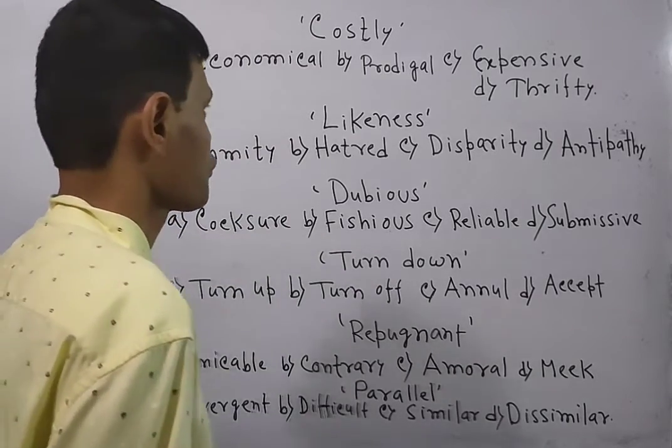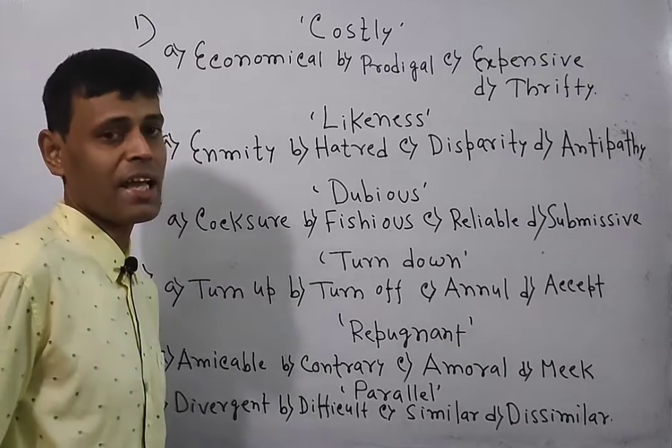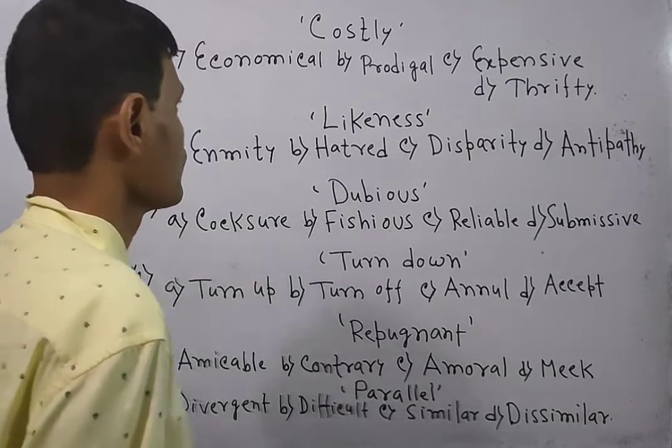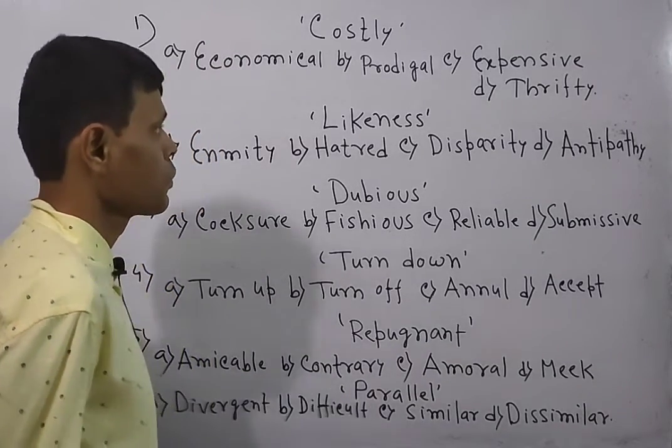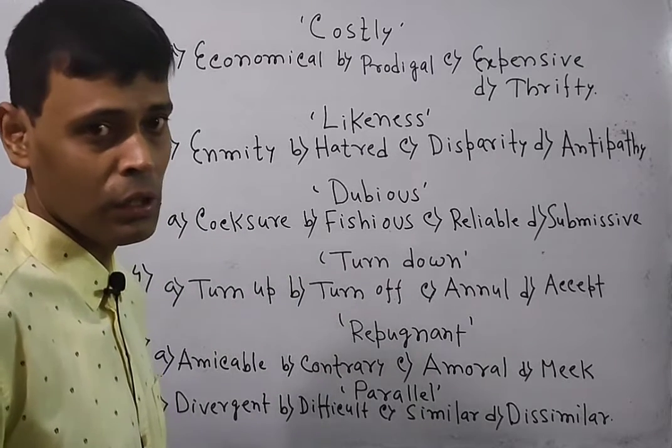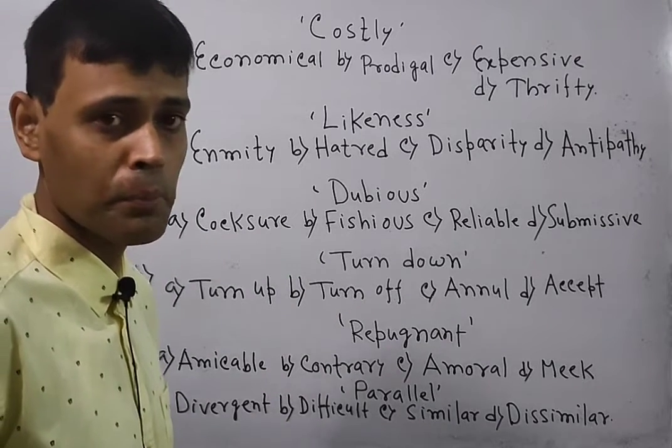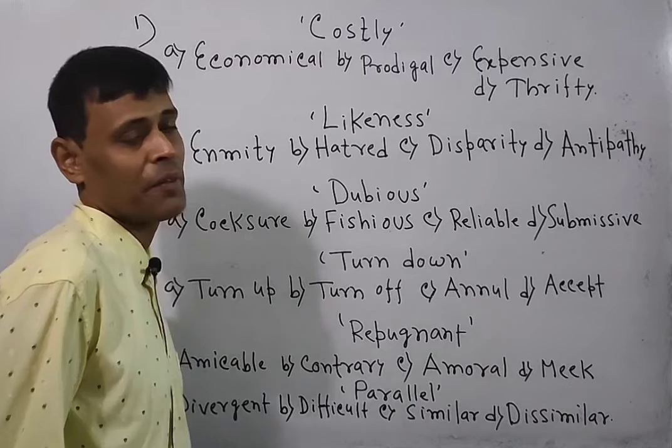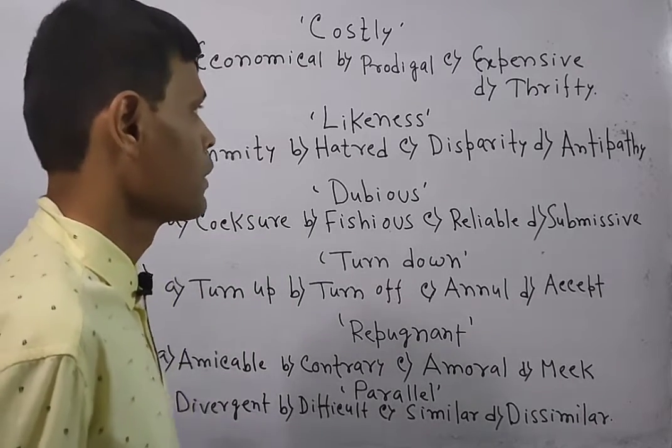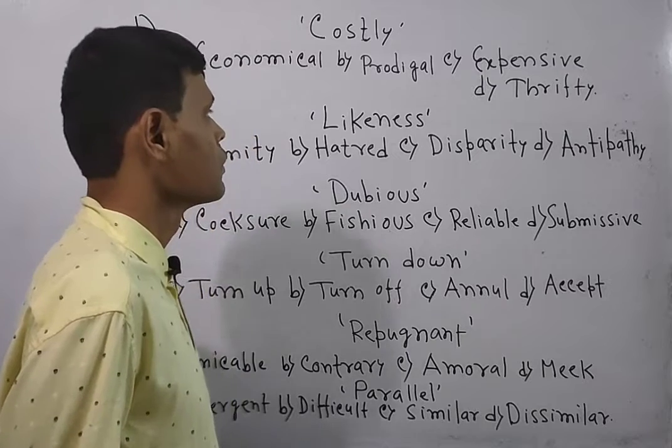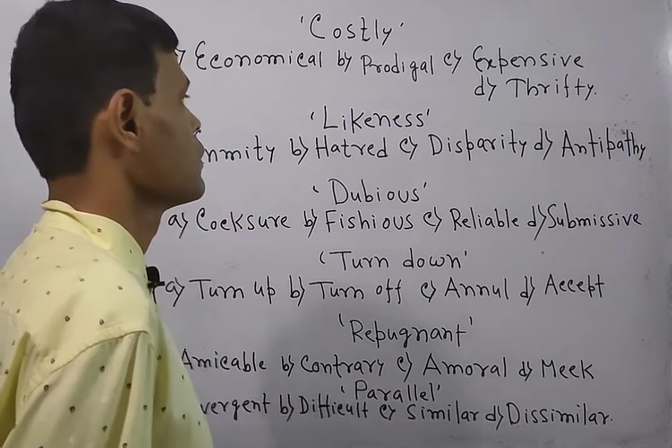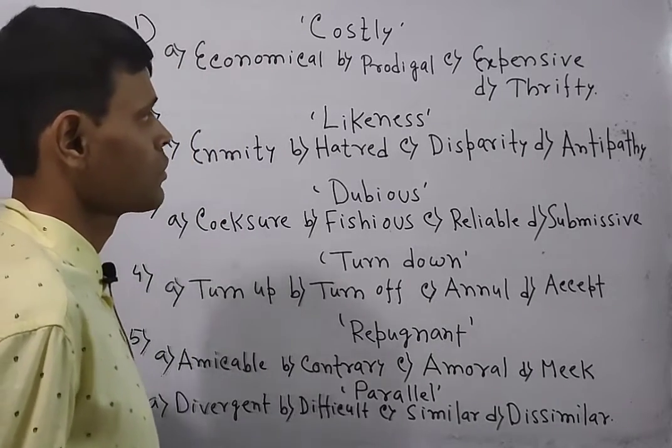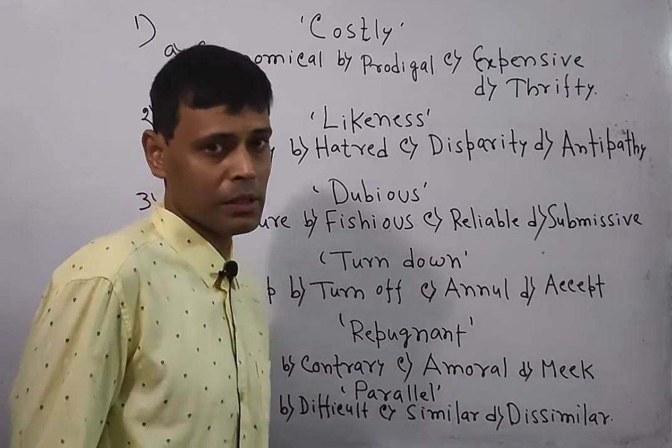Now look over the first question. The first question is going to say 'costly'. There are four options as usual: economical, prodigal, ecological. Economical means one who spends money within one's means or capacity. Prodigal means extravagant, one who spends too much money, expensive, extremely costly. And thrifty means extravagant or one who spends too much money.